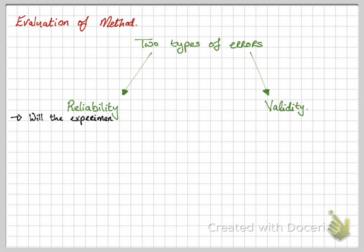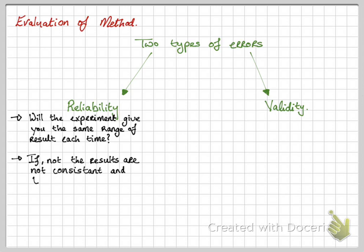Next is evaluation of methods. There's two types of errors when it comes to evaluating your method. One is reliability and second is validity. So we're going to start with reliability. Will the experiment give you the same results each time you do it? If it doesn't give you the same results, the experiment or the method is not consistent and therefore not reliable.